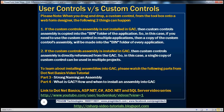If the custom control assembly is installed in GAC, then the custom control assembly is directly referenced from the GAC. In that case, a single copy of the custom control can be used in multiple projects. Let's actually look at that in action.